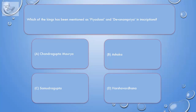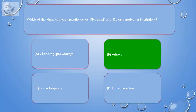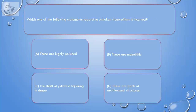Question: Which of the kings has been mentioned as Piyadasi and Devanampriya in inscriptions? A. Chandragupta Maurya, B. Ashoka, C. Samudragupta, D. Harshavardhana. Correct answer is B. Ashoka.